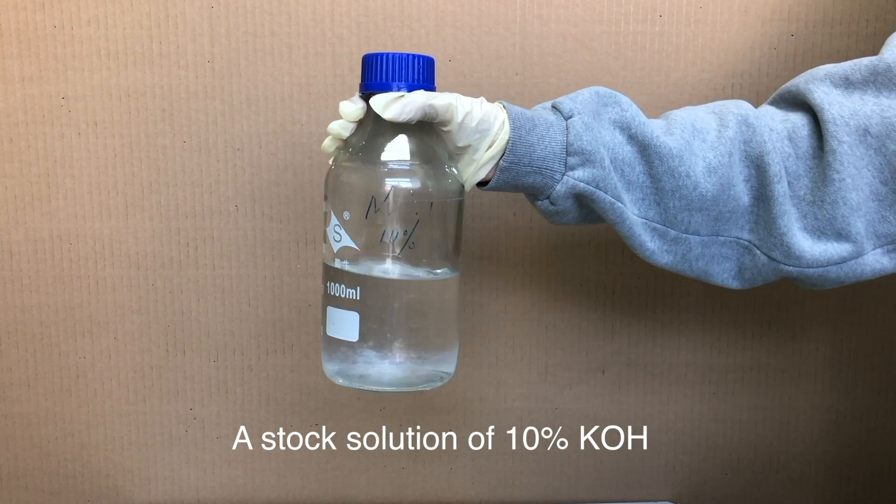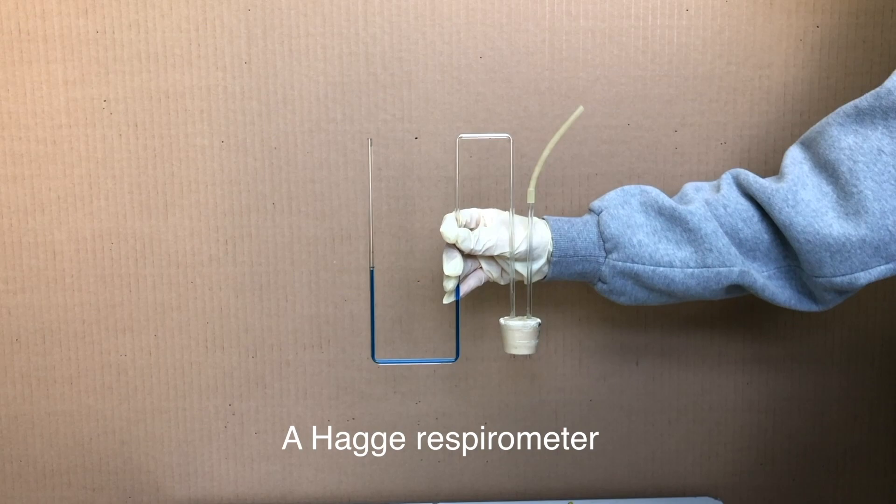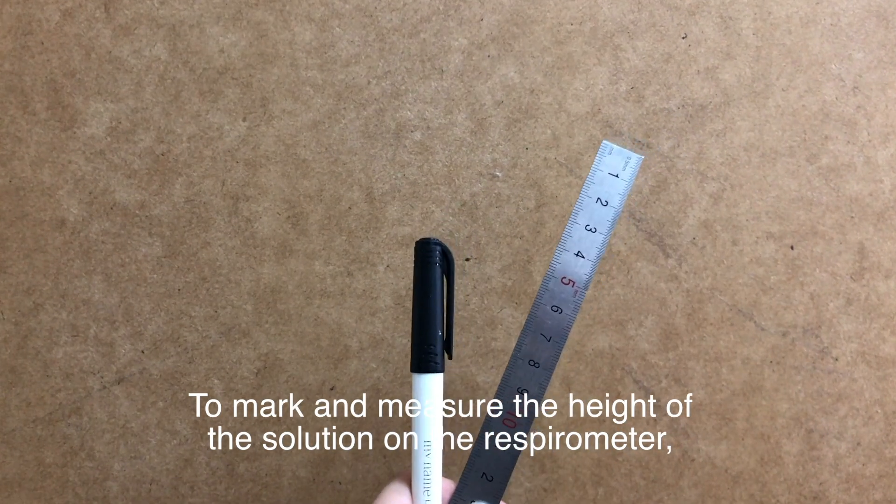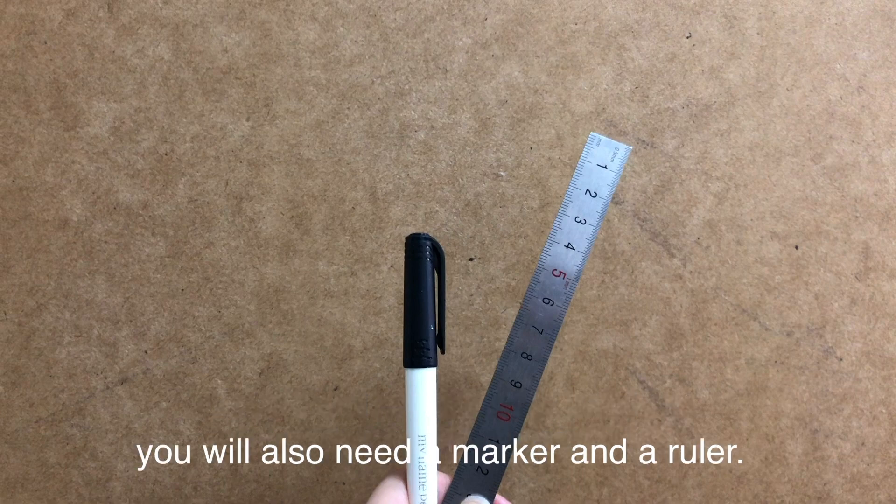You'll also need a stock solution of 10% KOH, a Hagi respirometer, and cotton. To mark and measure the height of the solution on the respirometer you will also need a marker and a ruler.